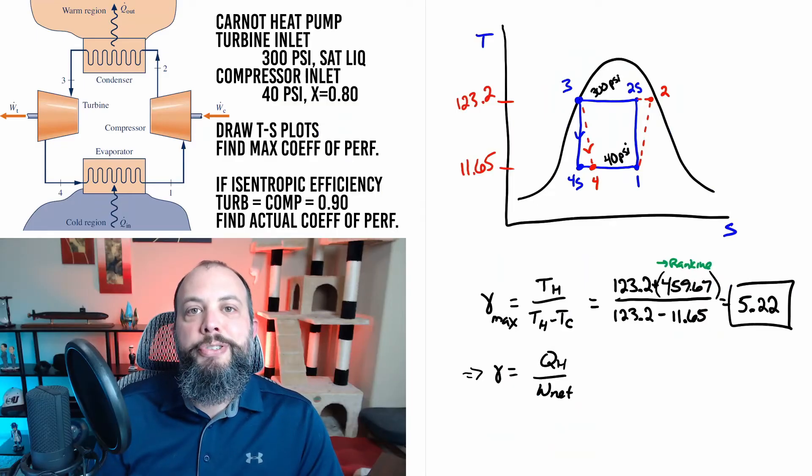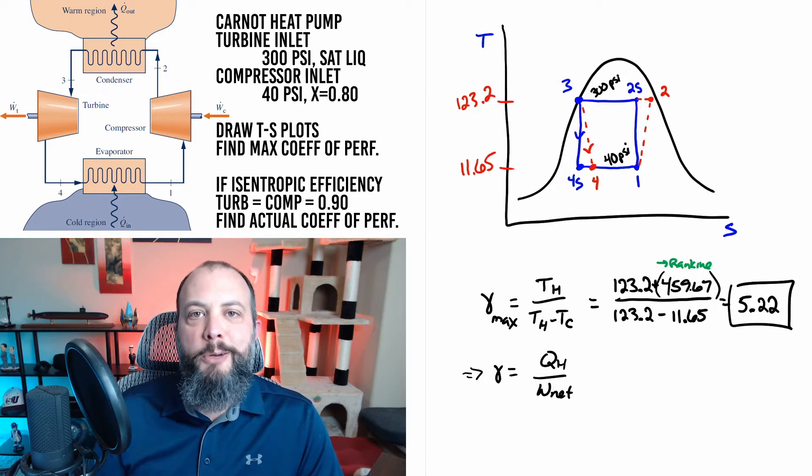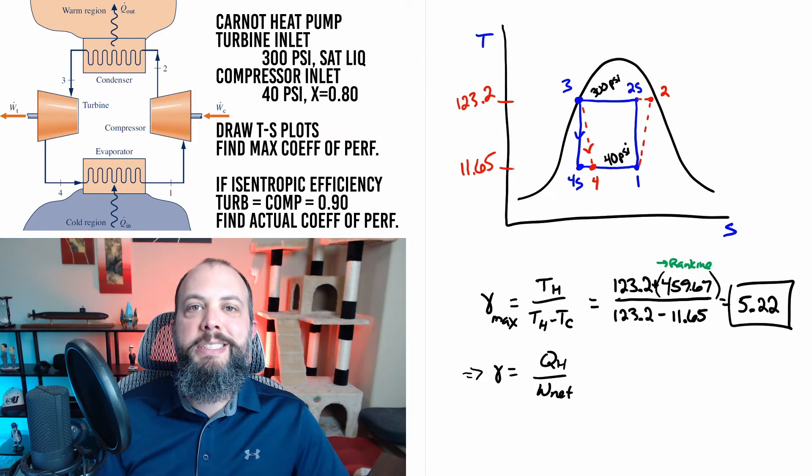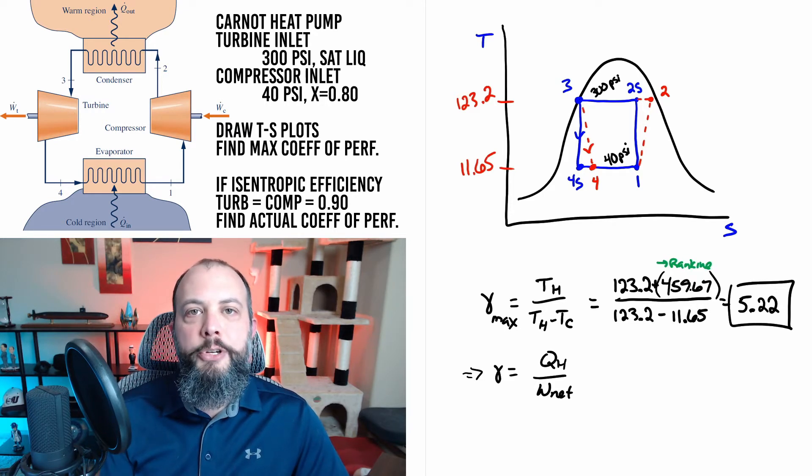After adding temperatures to the T-S plot we can now get the coefficient of performance for the ideal Carnot heat pump and we see that works out to be 5.22. The most common mistake I would expect to see on this part of the problem is forgetting to convert the numerator to Rankin. Whenever you're doing division with temperatures you must be in Kelvin or Rankin not Fahrenheit or Celsius.